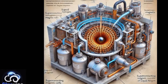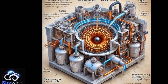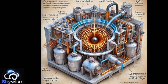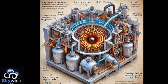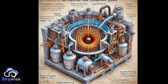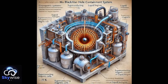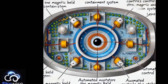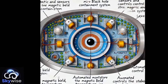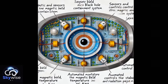Cryogenic cooling systems using liquid helium or nitrogen maintain low temperatures to protect containment materials from high temperatures due to Hawking radiation. Dense layers like lead surround the vacuum chamber and coils for radiation protection. The system also includes sensors for real-time monitoring and automated controls for dynamic adjustment of magnetic fields and cooling systems.